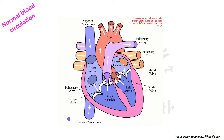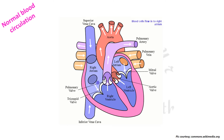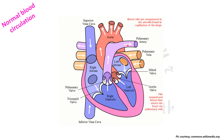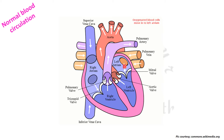Let us start by revising the normal circulation in an adult heart. Please stay with the dots which will show the circulation. The blood moves from the inferior vena cava to the right atrium, and also from the superior vena cava to the right atrium. Thereafter the blood moves into the right ventricle, from the right ventricle into the pulmonary artery, and from the pulmonary artery it goes to the lungs where it gets oxygenated.